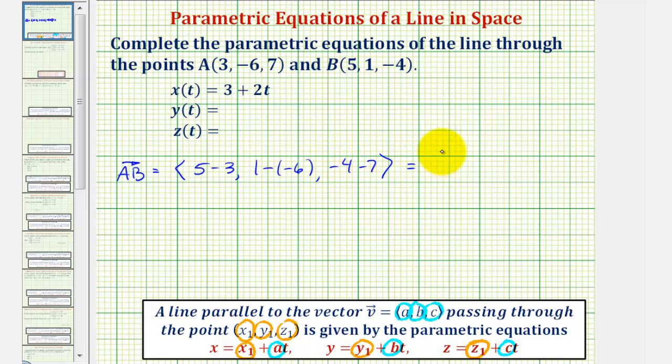Our direction vector has an x component of 2, a y component of 7, and a z component of negative 11. This means that a equals 2, b equals 7, and c equals negative 11.